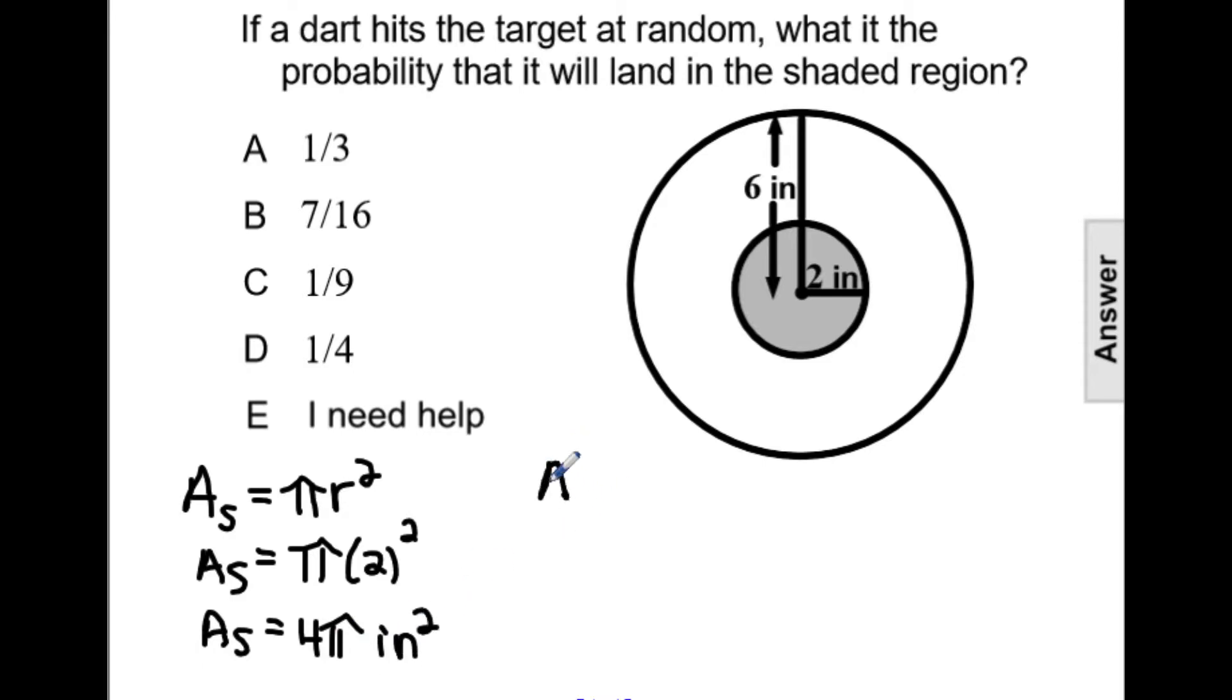Then we need the area of the total circle, the total region, which is going to be the outer radius circle. We're still working with pi r squared, but now this radius is going to be 6. So we have 6 squared, which gives us the area of the total region to be 36 pi inches squared.